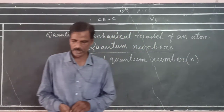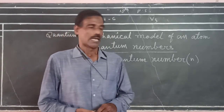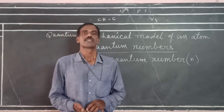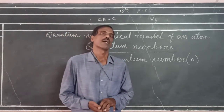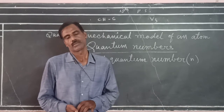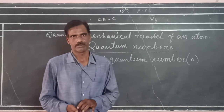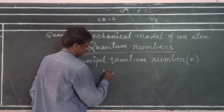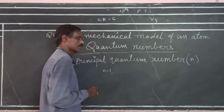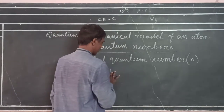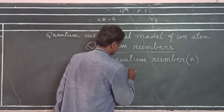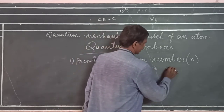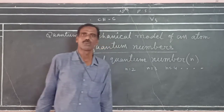The principal quantum number is generally represented by n, and it gives the size and energy of the orbital. Principal quantum numbers are natural numbers: n = 1 for the first shell, n = 2 for the second, n = 3 for the third, n = 4 for the fourth, and so on.